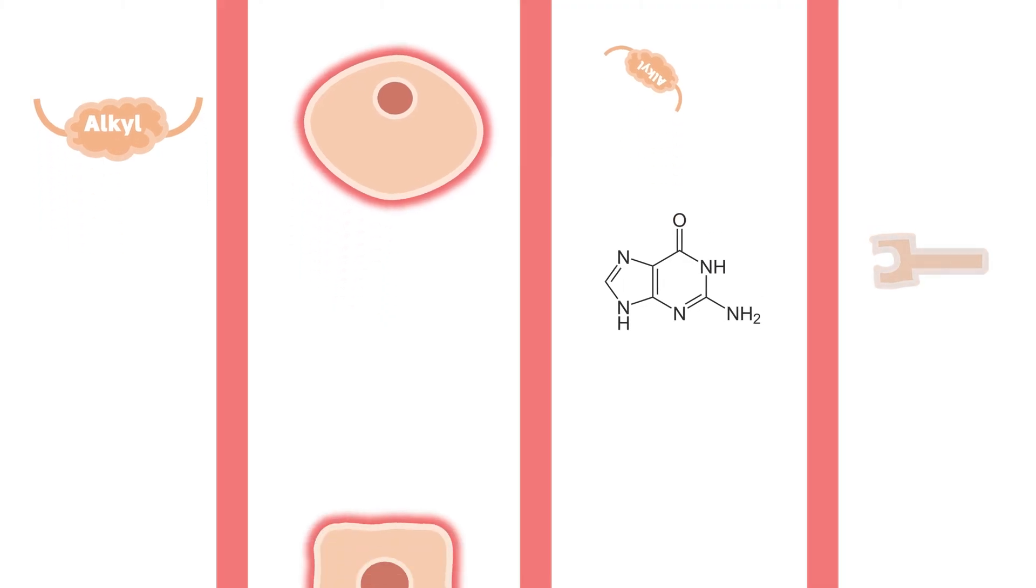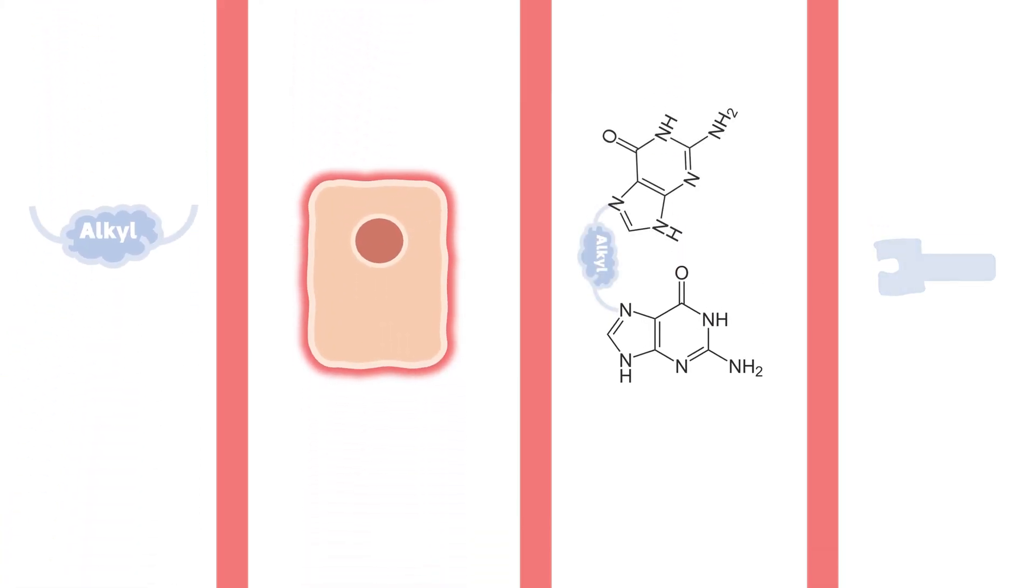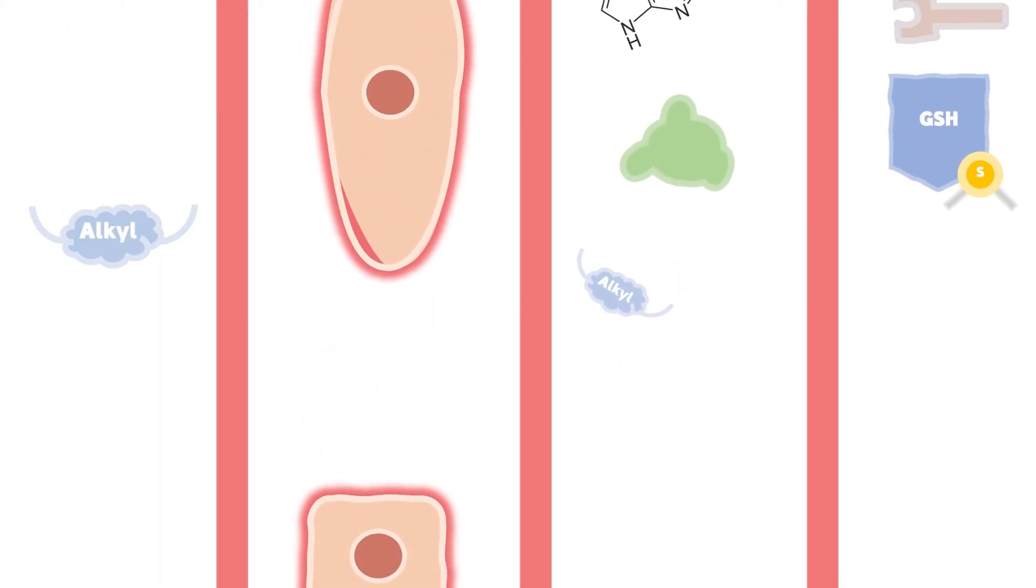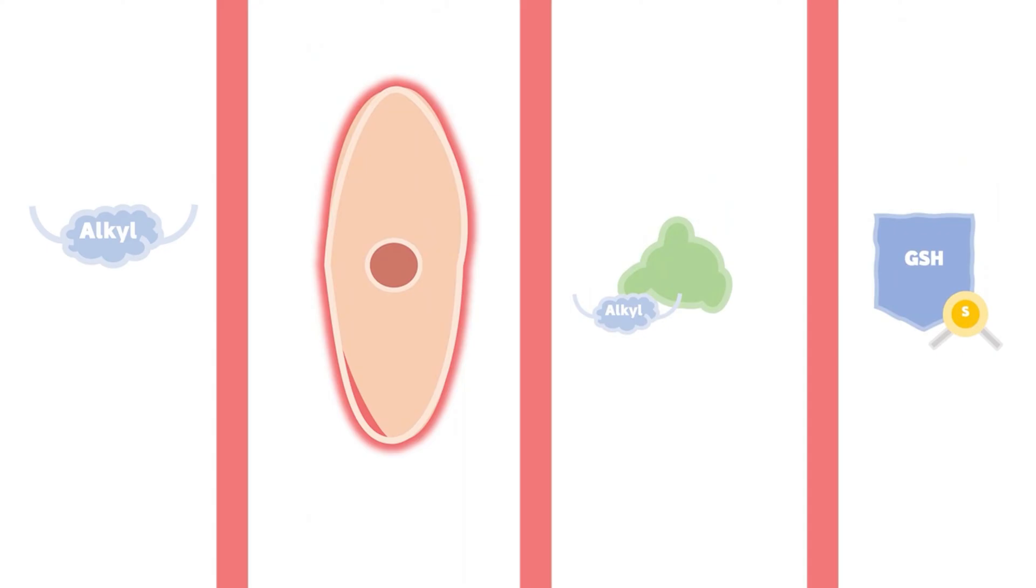And as we know, alkylating agents can stress the cell via different mechanisms, depending on the cell's capacity to repair the damage, whether via repairing the DNA damage, increasing the glutathione to inhibit its activity, or to increase the efflux transporters.